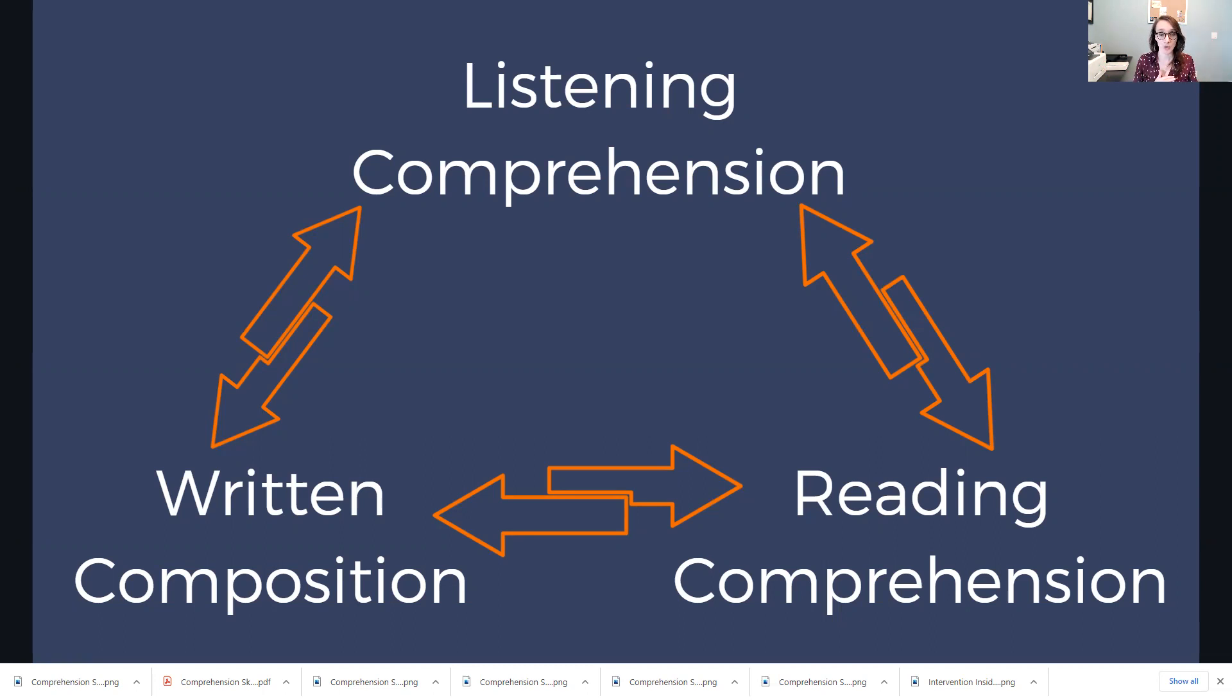We know that if decoding plus listening comprehension is going to give us reading comprehension, we can start to think about what are those listening comprehension skills that students need to have when they're listening to information, recognizing that a lot of what we do in class is we sit and listen to our teacher talk. We listen to a lecture. We need to be able to draw important information out. Then we spend a good amount of our time as we get older reading and trying to draw meaning from reading. What we also recognize is that we have a triangulation here that we don't want to leave out. This whole idea of this also impacts our writing.